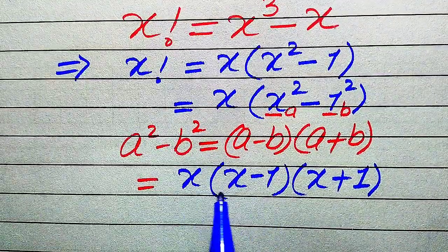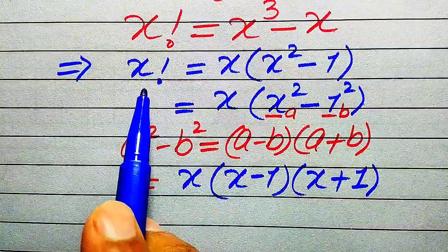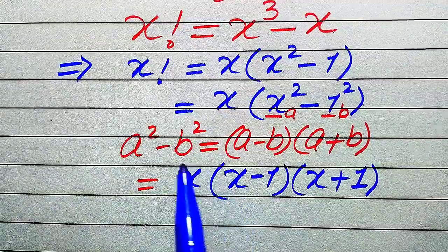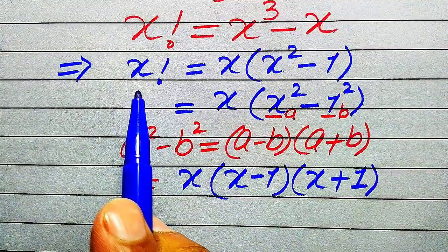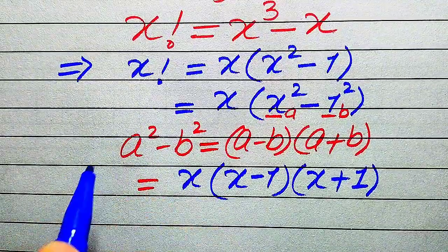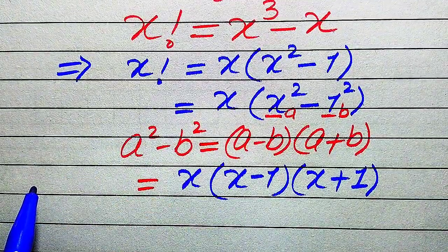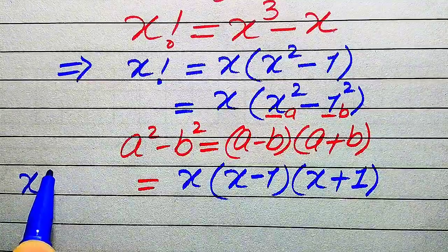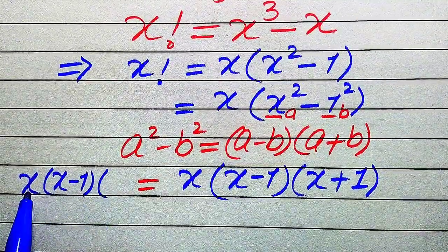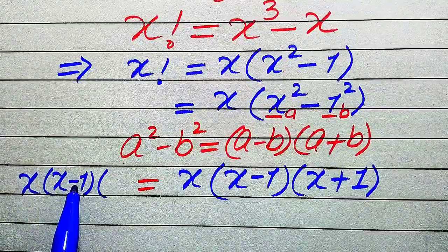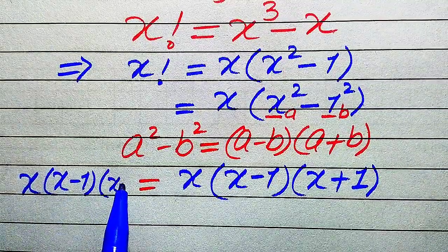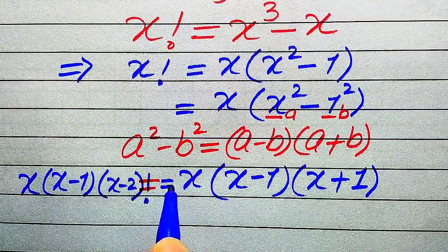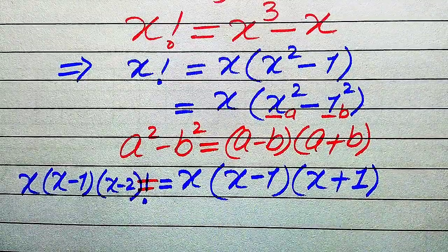Now on the right hand side we have x times (x minus 1), so we expand the factorial on the left hand side up to the (x minus 1) term. Expanding x factorial gives x times (x minus 1) times (x minus 2) times (x minus 2) factorial. This equals x times (x minus 1) times (x plus 1).